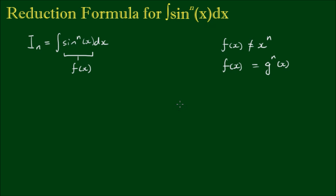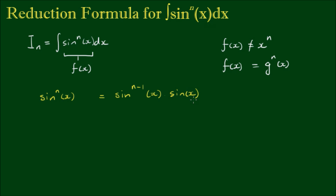We'll tackle this problem with integration by parts. To do that, we'll need to separate the integrand into two parts. I can do this by writing sine to the nth power of x, and using index laws, I can separate the power: sine to the n minus 1 power of x, multiplied by sine of x. Then integrate both sides.